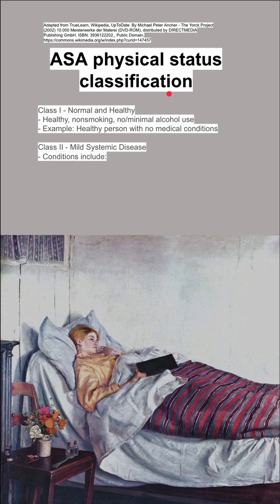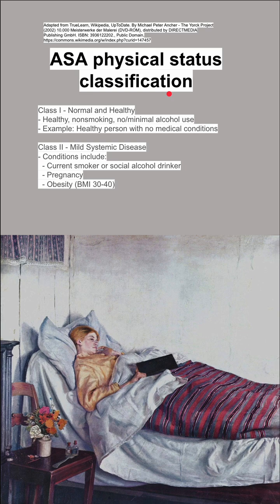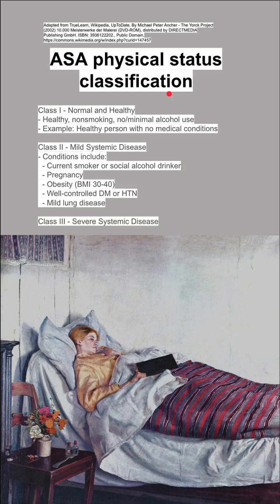Class 2 indicates mild systemic disease. Conditions can include current smoking or social alcohol drinking, pregnancy, obesity with a BMI of 30 to 40, well-controlled diabetes or hypertension, or mild lung disease.